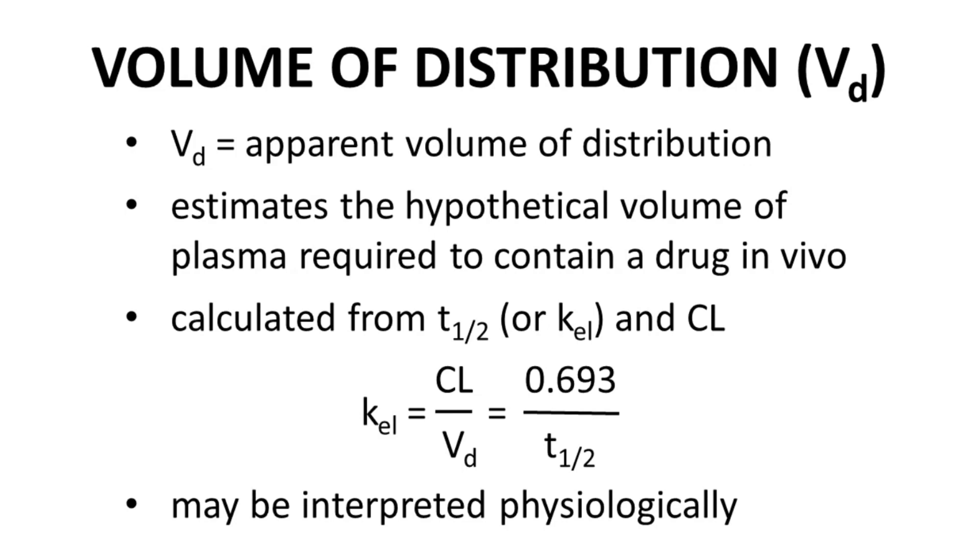We think of clearance as a volume of plasma per unit time from which drug is removed. That introduces a question. How much plasma contains a drug? That would be the volume of distribution, VD, more properly called the apparent volume of distribution.